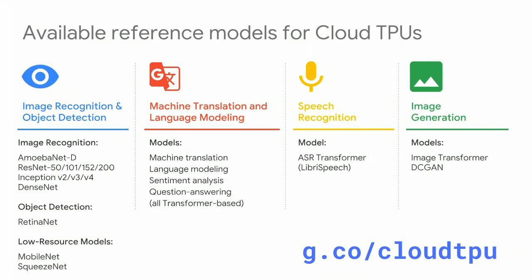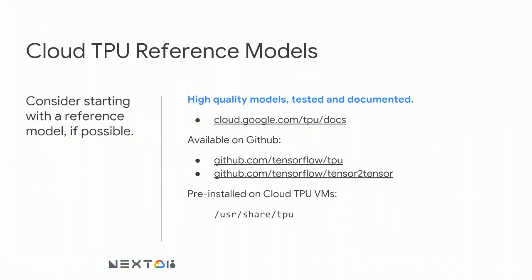I would be remiss if I didn't emphasize the availability of our reference models for Cloud TPUs. They span a wide variety of vertical domains, they're tested, they work really well, and some are even commented. They're available as open source on GitHub and on Cloud TPU VMs provisioned with CTPU at /usr/share/tpu. But this is a TensorFlow Cloud TPU deep dive, so we're going to go down to the barest level.